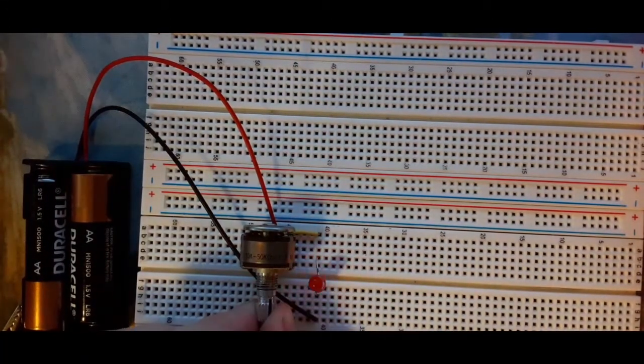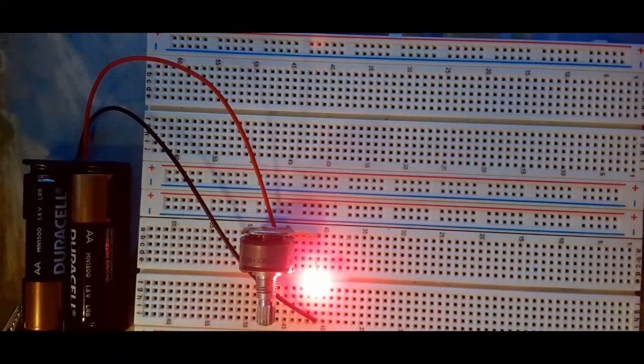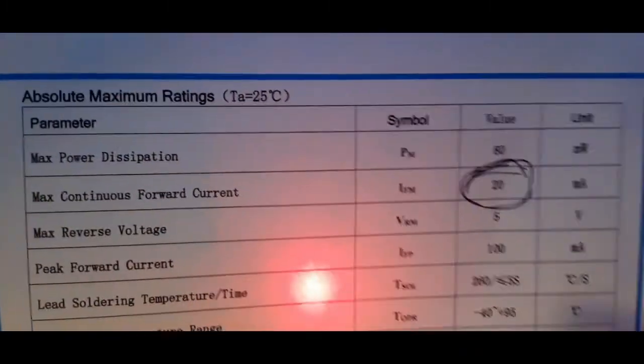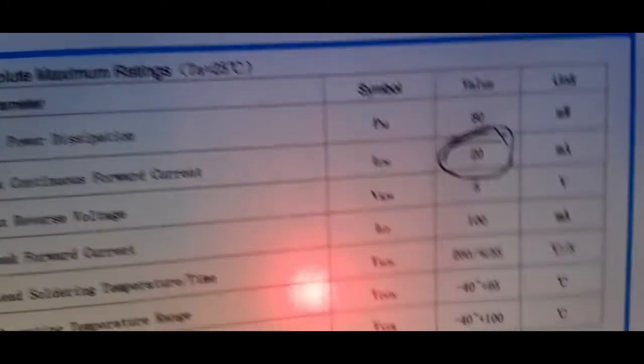Now there's a thing that we need to know about LEDs, which is how much current we can put through them. And for that, I've got the data sheet. So right here, it says that our maximum amount of forward current that we can put through the LED is 20 milliamps. And the nominal voltage that these LEDs are usually on is around 2 volts. So we're going to use this in our calculations to figure out what size resistor we need for our flashlight.